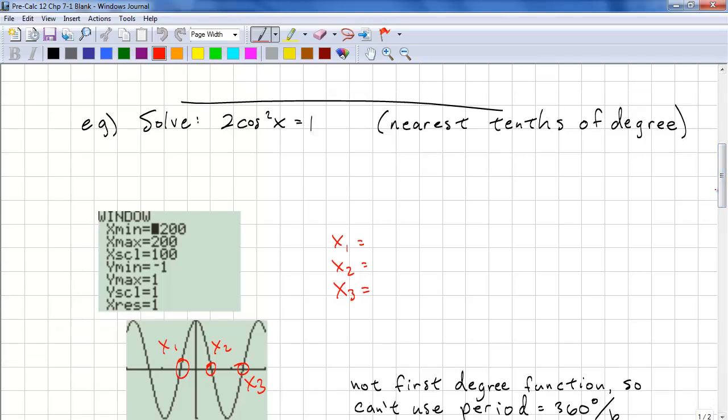Our first example is solve 2 cos squared x equals 1 to the nearest tenths of a degree. So we have 2 cos squared x minus 1 equals 0. It's always easier to look for zeros, so we set that to y1 and we calc zeros.